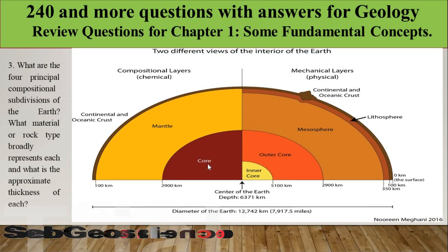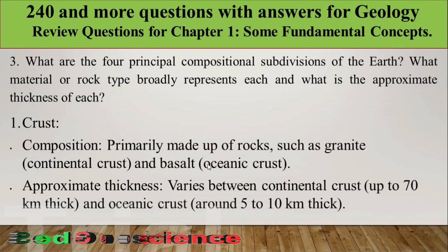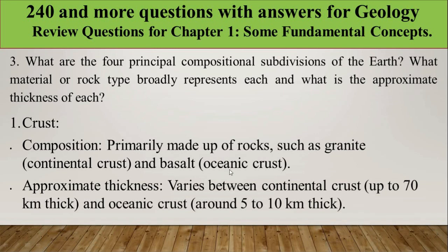The first subdivision is the crust. Its composition is predominantly granitic for continental crust and basaltic for oceanic crust. The approximate thickness is up to 70 km for continental crust and around 5 to 10 km for oceanic crust.